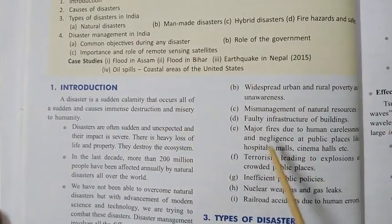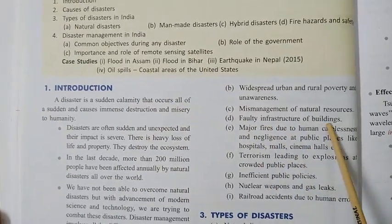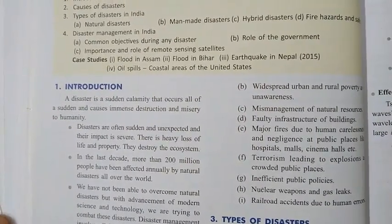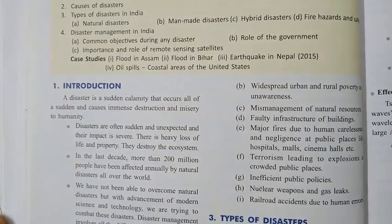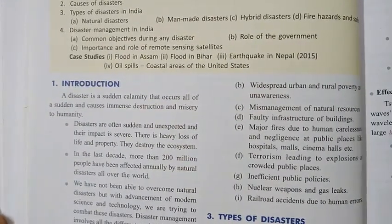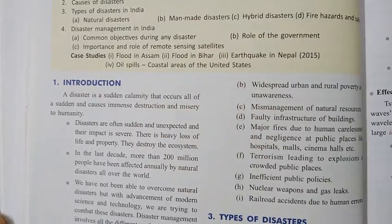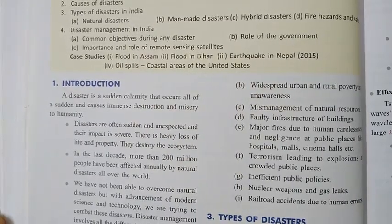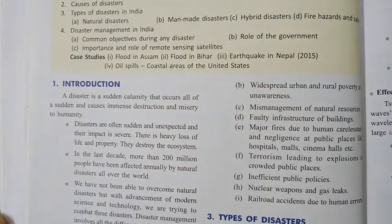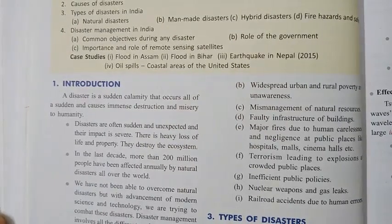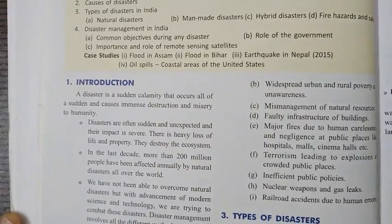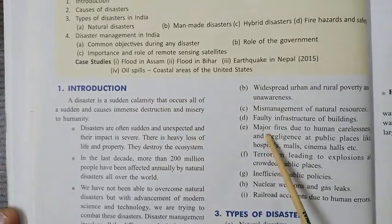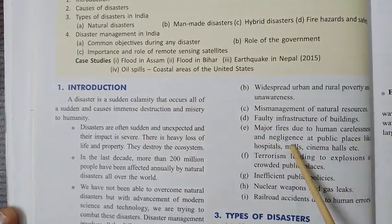The fourth cause is faulty infrastructure of buildings. When cities start developing, people buy land and build houses without any planning — no planning of roads and drainage systems. When colonies develop, we face so many problems.